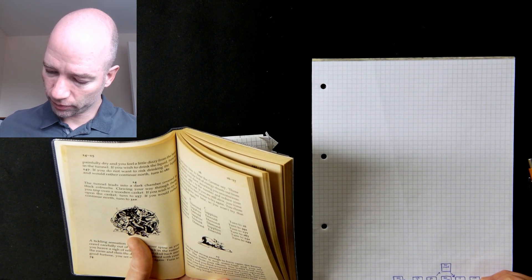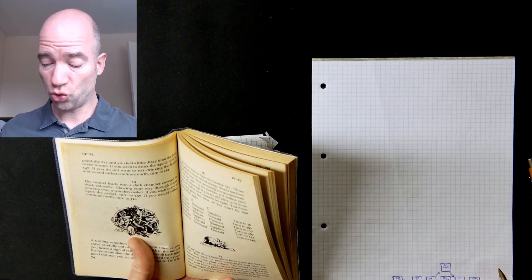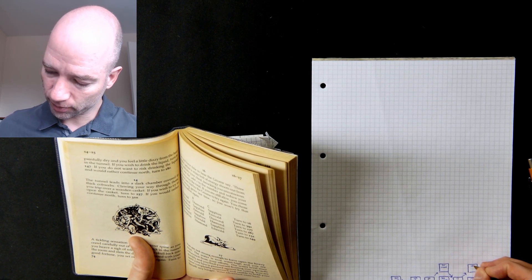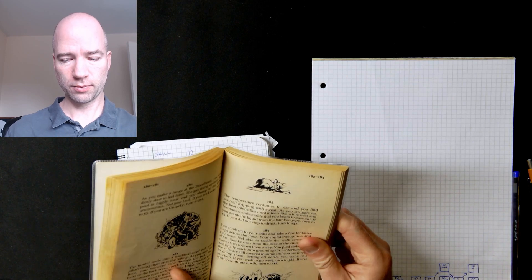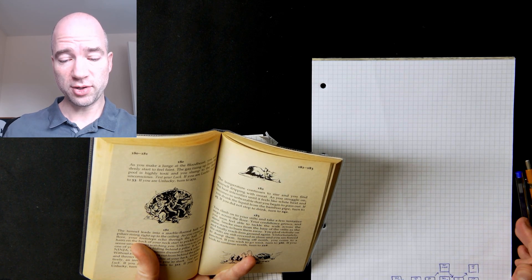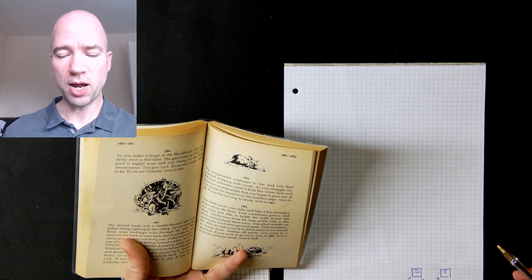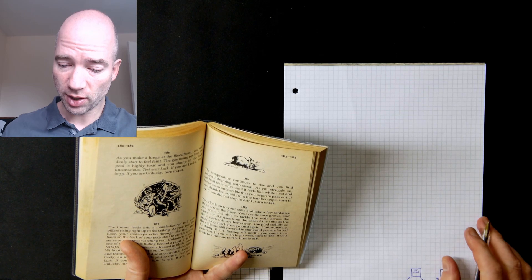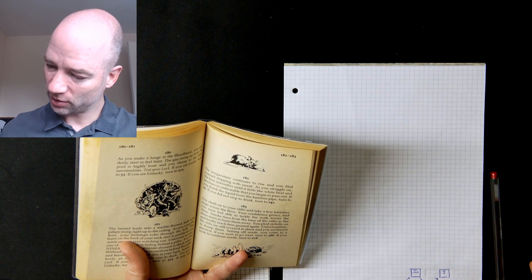Now if some part of this tunnel seems to be artificially hot and there is something there to drink, that does sound like a trap to me, so I am not going to drink that, I am going to continue north. The temperature continues to rise and you find yourself dripping with sweat. As you struggle on, the heat intensifies until it feels like white heat and becomes so unbearable that you begin to pass out. If you drank the liquid from the bamboo pipe, turn to 25. If you did not stop to drink, turn to 242. Okay, so maybe I should have drunk after all.